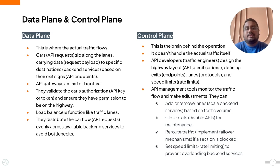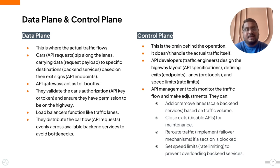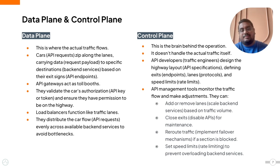In a highway system, toll booths ensure that vehicles have permission to travel and are roadworthy. Similarly, API gateways function as toll booths by validating API keys, tokens, and other credentials. Furthermore, just as lanes on a highway provide more room for traffic, load balancers in API management ensure even distribution of traffic across different backend services, preventing potential bottlenecks. This analogy helps in understanding the role of data plane, control plane, API gateways, and load balancers within an API management framework.